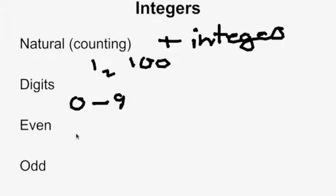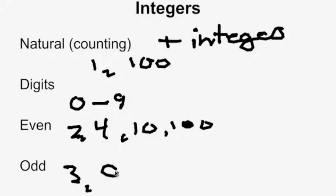And then even numbers, you should know, are divisible by 2. So you have 2 and then up to 4, 10, 100. And odd numbers are not divisible by 2. So you have 3, 9, 13. And that is your sets of numbers that you need to know.